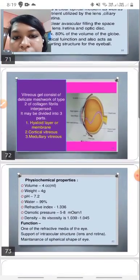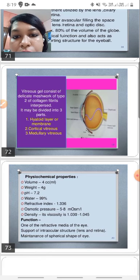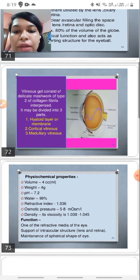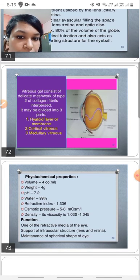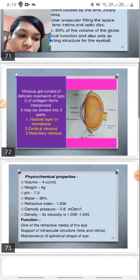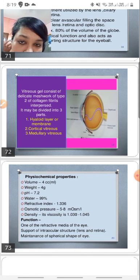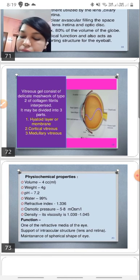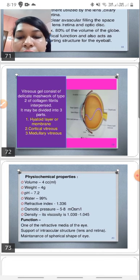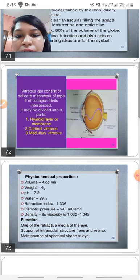The vitreous gel consists of a delicate meshwork of type 2 collagen fibrils and it can be divided anatomically into the anterior layer or membrane, which is the most anterior portion, the cortical vitreous which is present in the periphery near the retina, and medullary vitreous which lies in between.